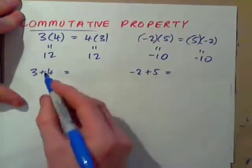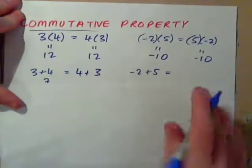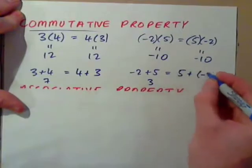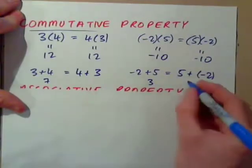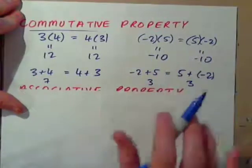It also works for addition. 3 and 4 is 7, isn't it? That's the same as 4 plus 3, right? Negative 2 plus 5 is positive 3. That's the same as 5 plus negative 2. Also positive 3. So, commutative means we can switch the numbers around with addition or multiplication.